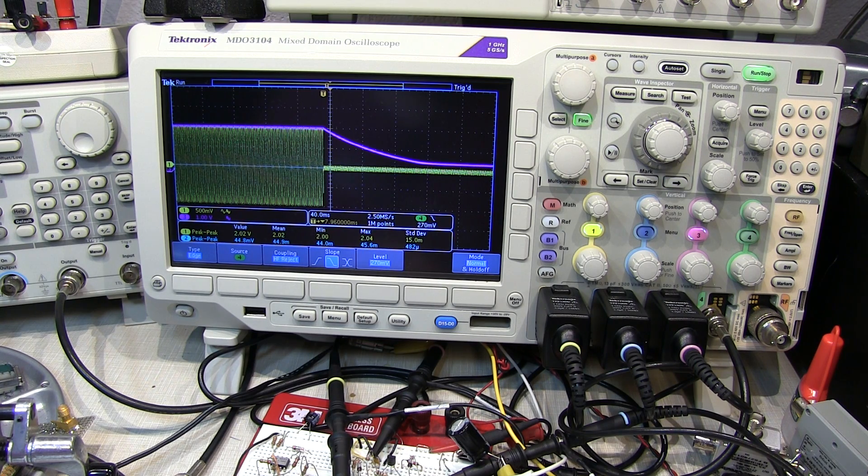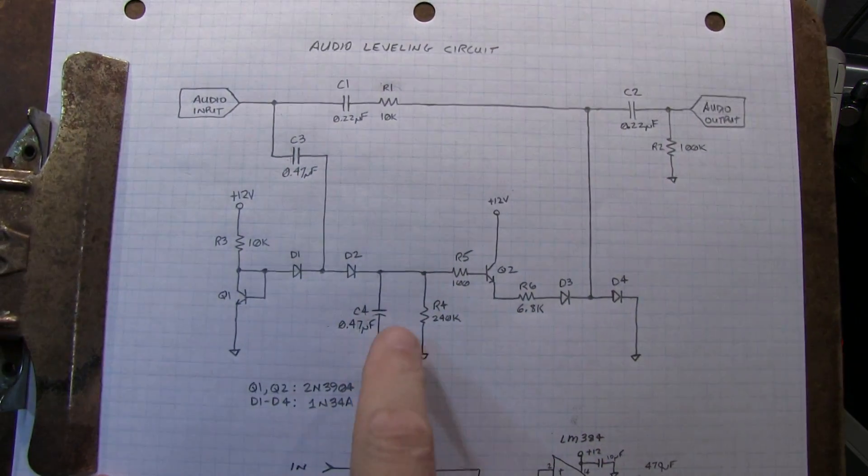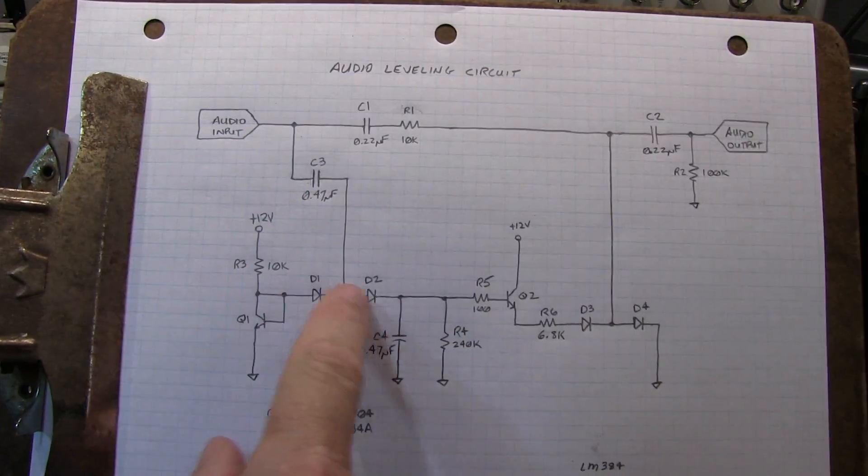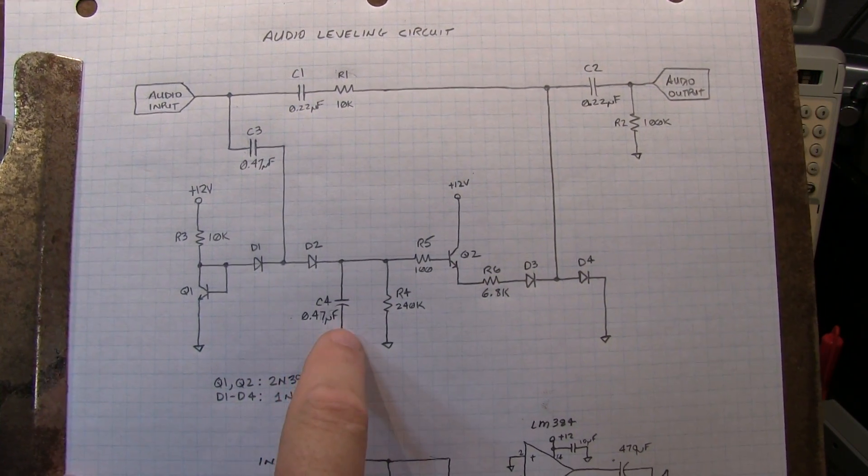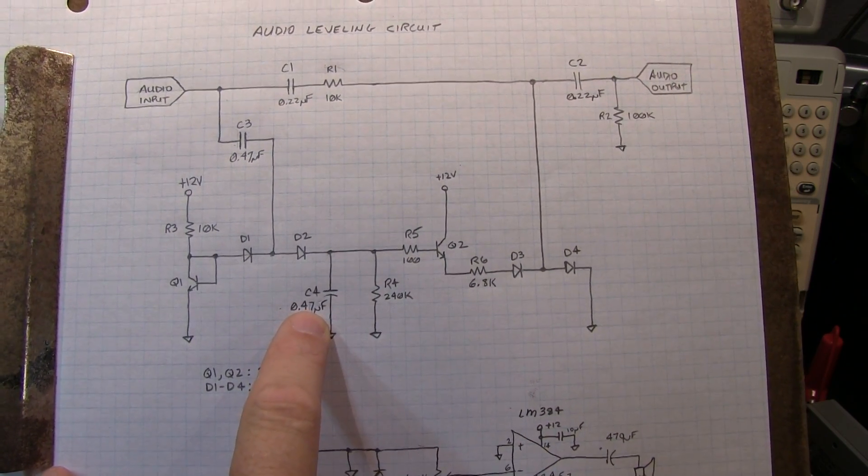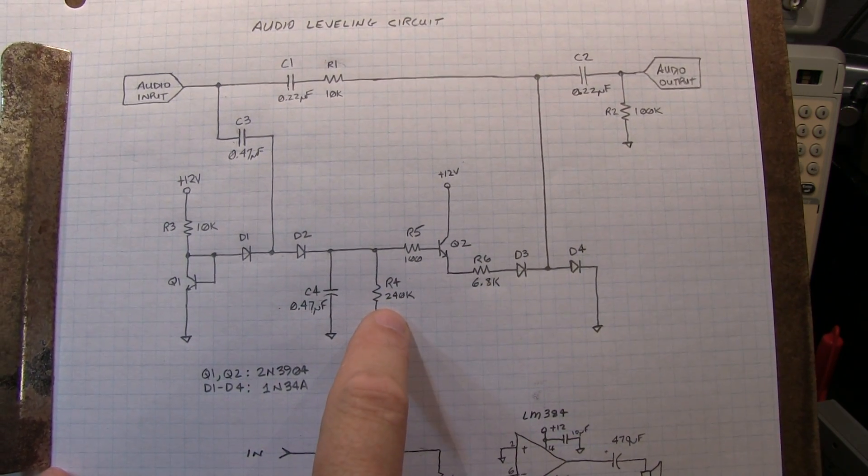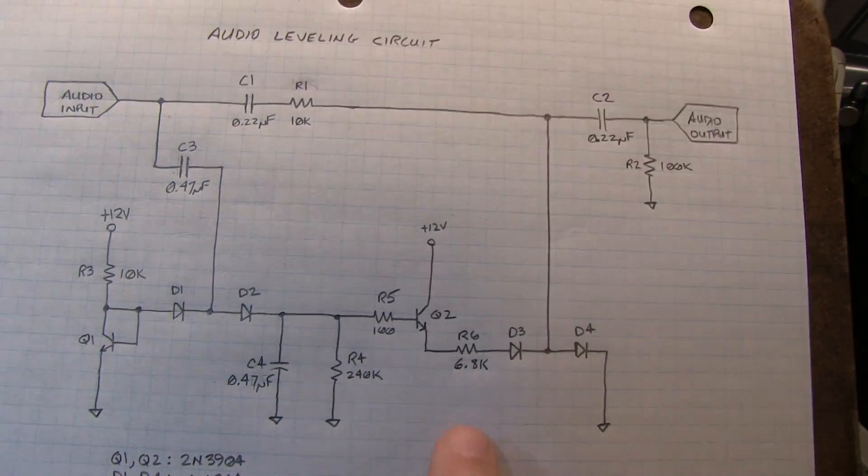All of that is typically controlled by the way we've got this set up. The attack time is really just driven by that, and that's pretty good. The release time can be adjusted by either increasing this capacitor value or increasing the bleed resistor value.